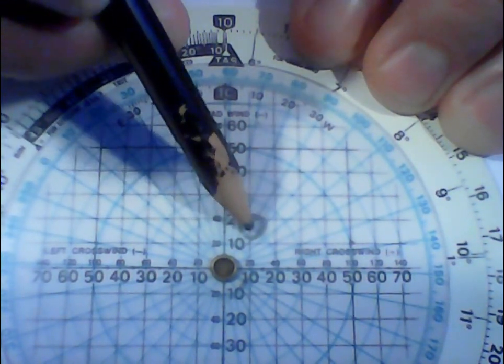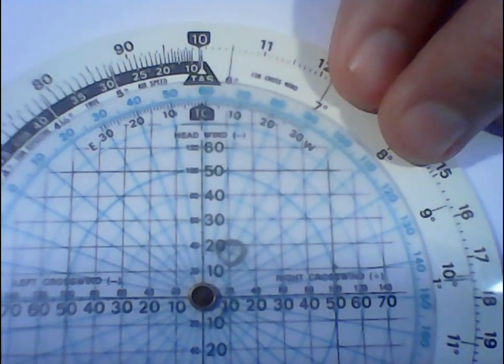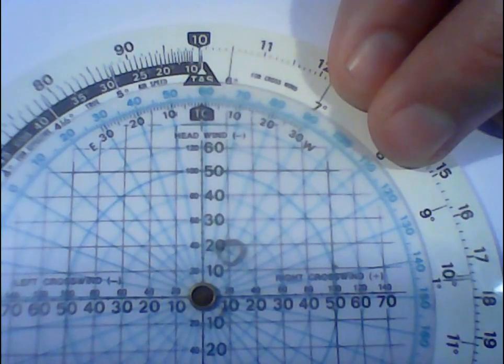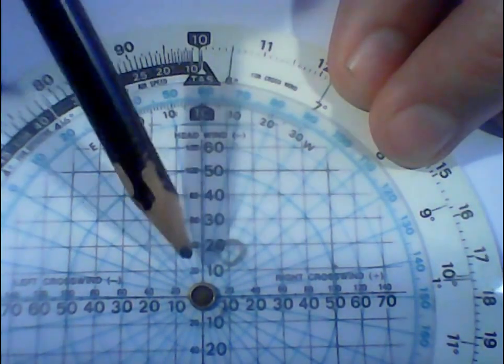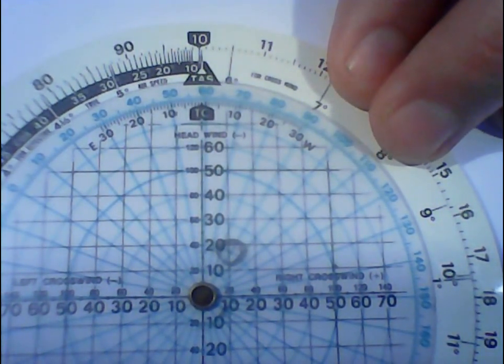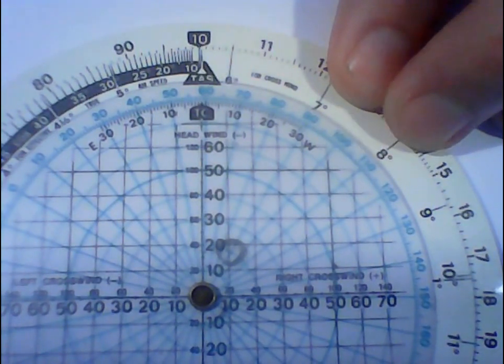So in this particular case it's 16 knots of headwind roughly. So our new ground speed is going to be 100 minus our headwind component, which is 16. So our ground speed is actually going to be 84 knots.